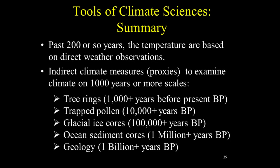In summary, we have direct measurements of temperatures based on direct weather observations only from the last 200 years or so. Indirect climate measures or proxies allow us to determine climate on 1,000 years or more scales. Tree rings provide about 1,000 years before present. Glacial ice cores provide about 250,000 years before present. Ocean sediment cores provide about 1 million years before present. And geology in general provides 1 billion years before present.